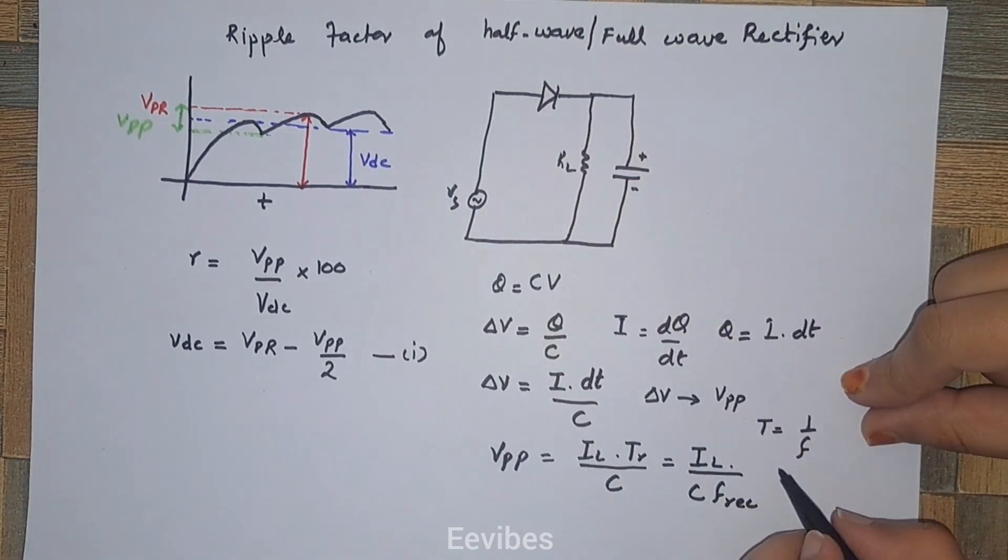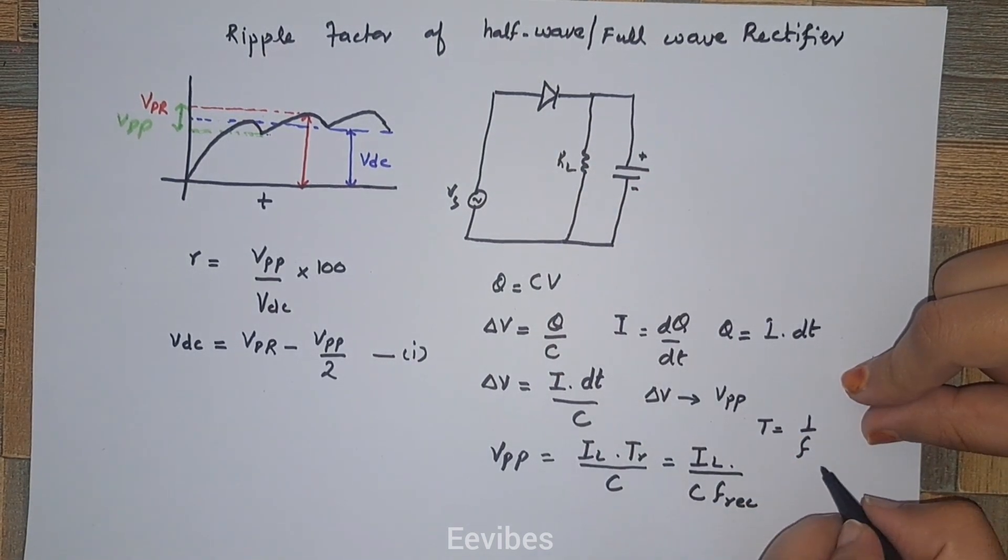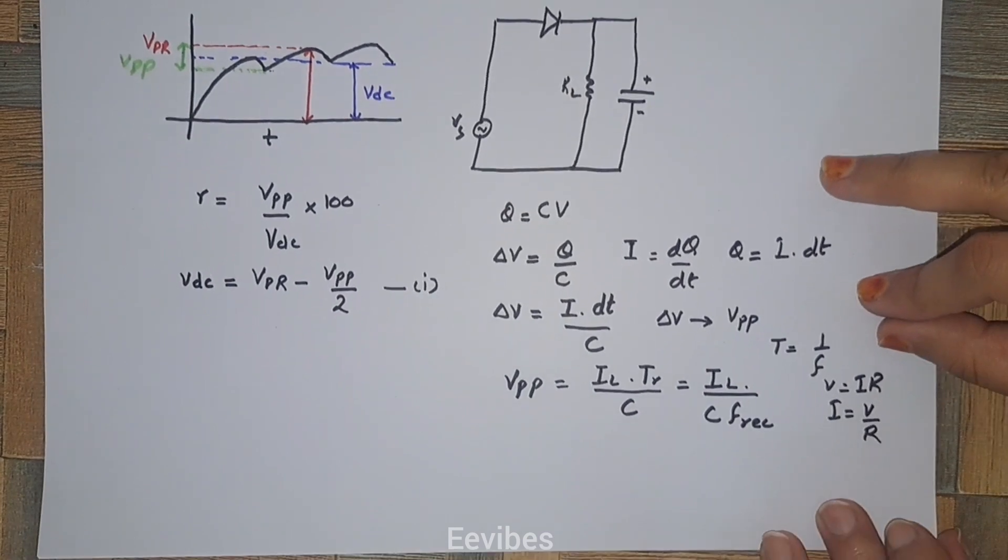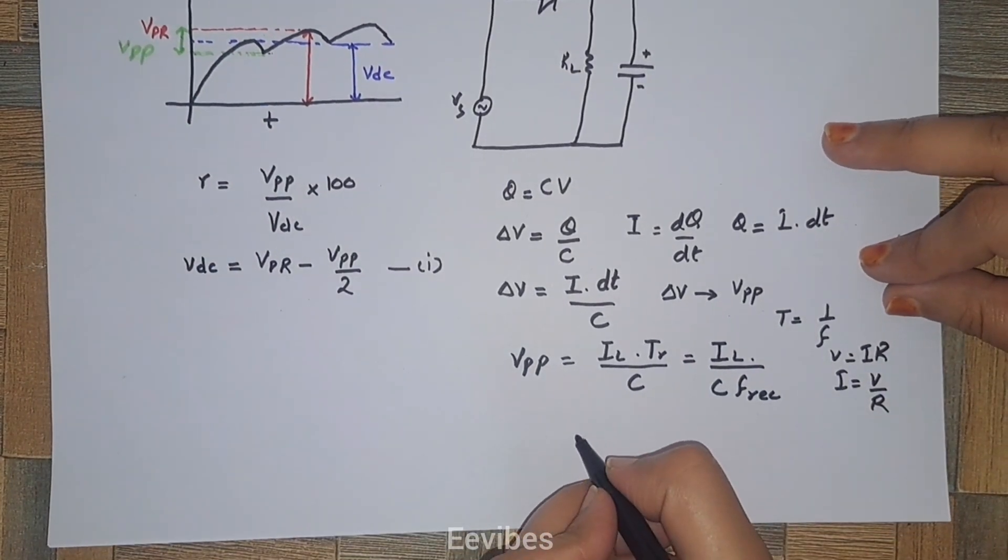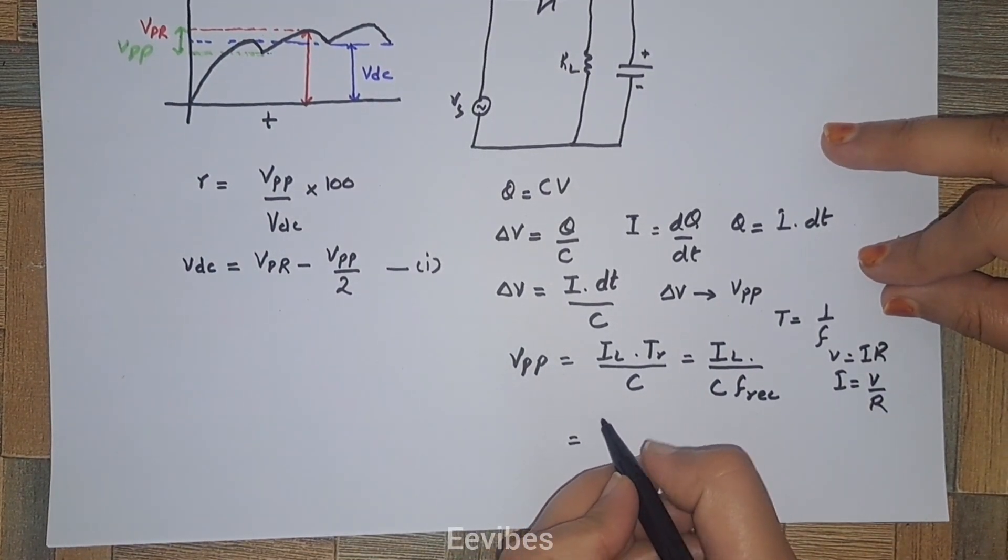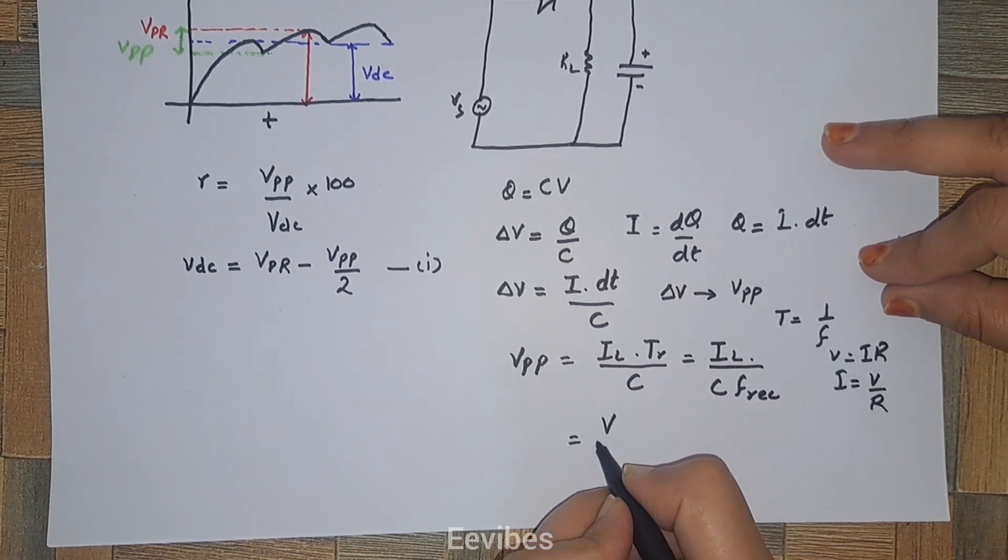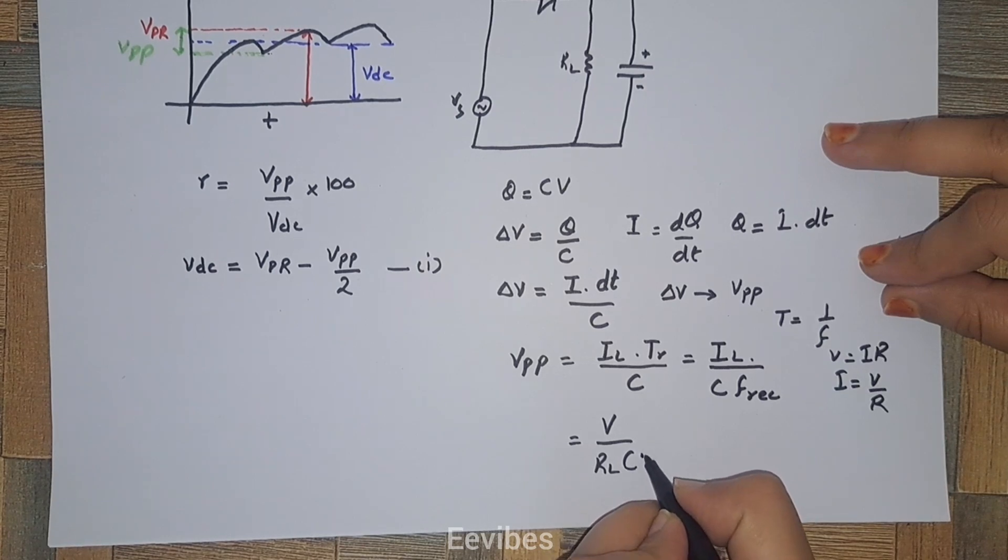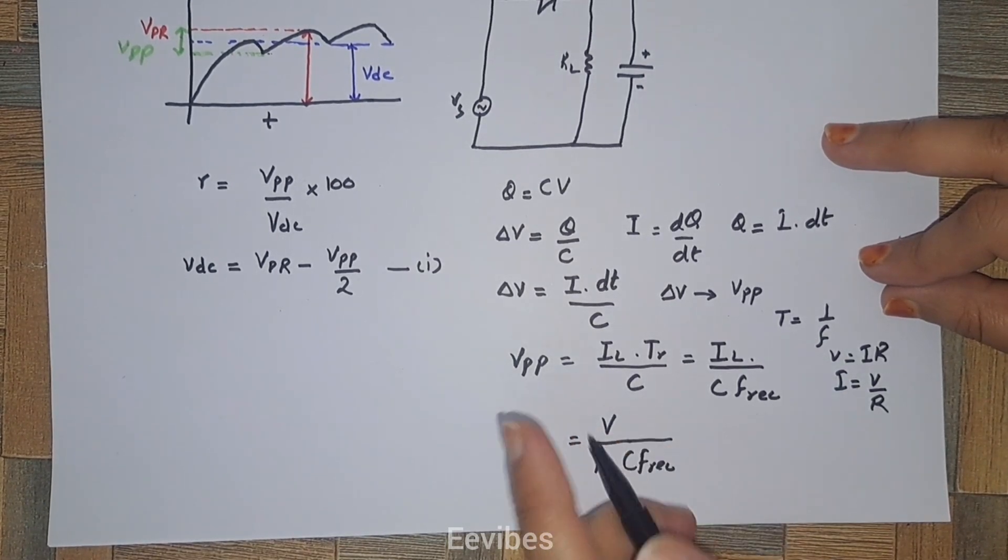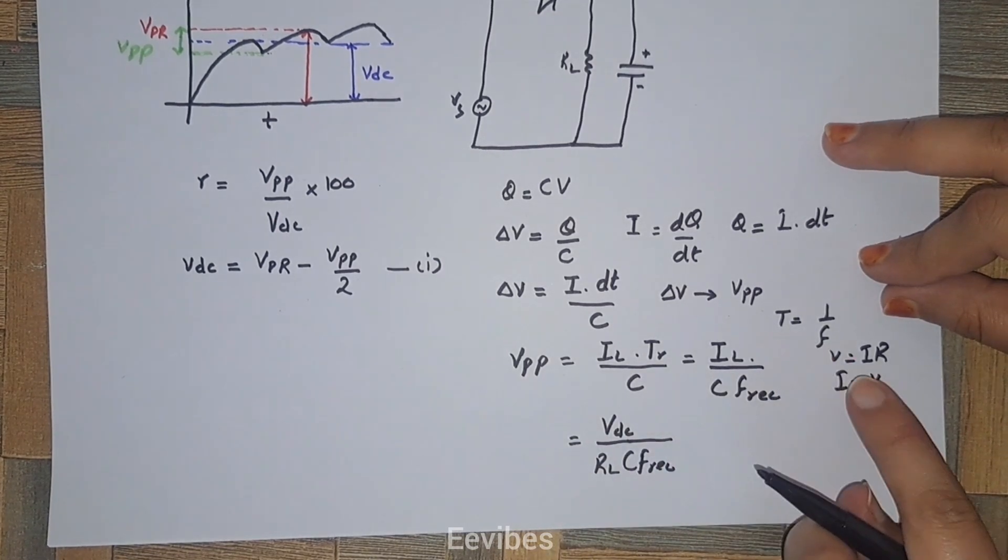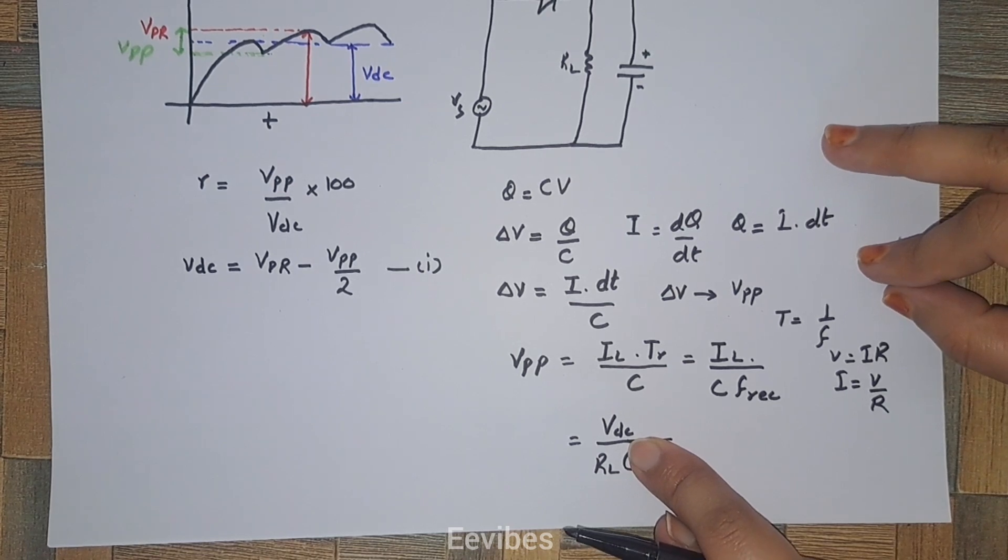IL is the load current present across the resistor RL. According to Ohm's law, V equals IR, so I equals V over R. Therefore IL equals V over RL times C times F rectified. Since DC voltage will be developed across the load, we represent it as VDC.